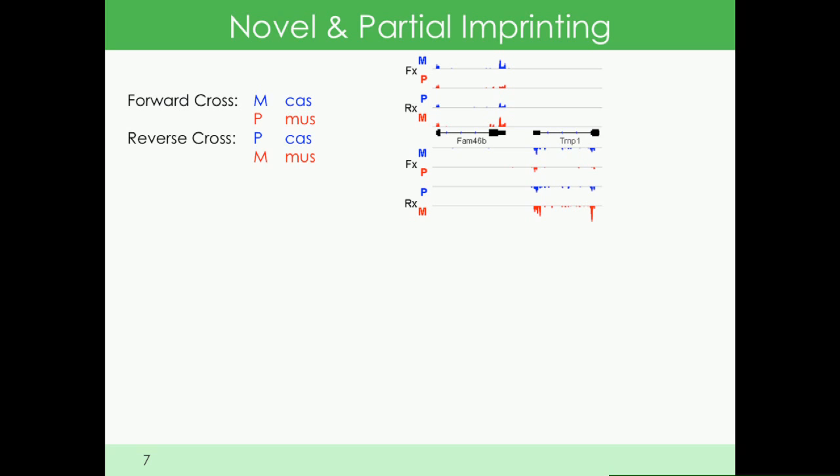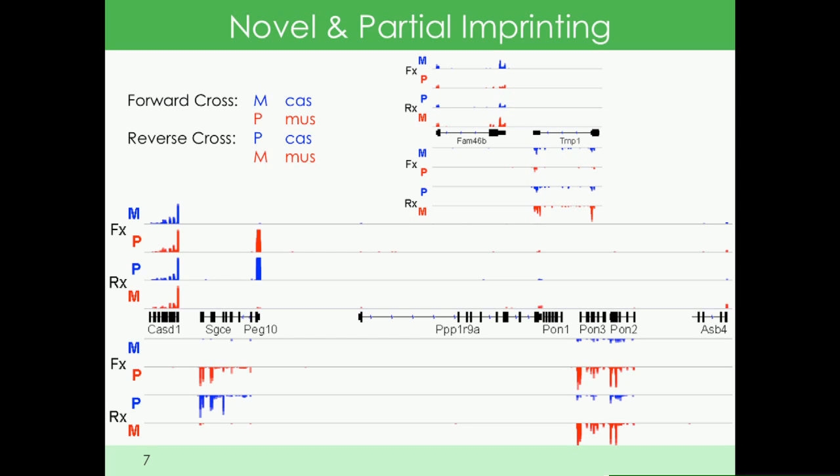We found novel imprinted genes. What was true for this entire class—here's an example of two genes sitting next to each other—was that the allelic imbalance in these imprinted genes was attenuated. You can see there's a maternal preference, but the paternal allele is still expressed. In contrast, this is what a canonical imprinted cluster looks like—the PEG10 cluster. You can see that SGCE and PEG10 are expressed specifically from the paternal allele.